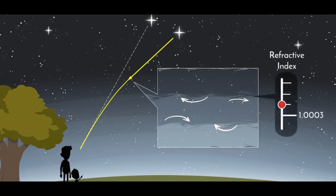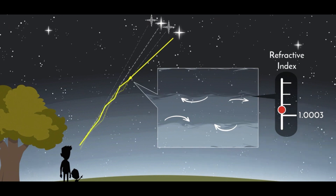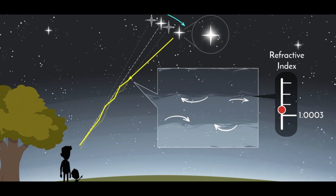Since the refractive indices of the atmospheric layers are not steady, the apparent position of the star is not steady either — it changes slightly but randomly. Similarly, because of random changes in refractive index, the brightness of the light coming from the star also appears to change. The resulting effect of changing apparent position and changing brightness causes the star to twinkle.